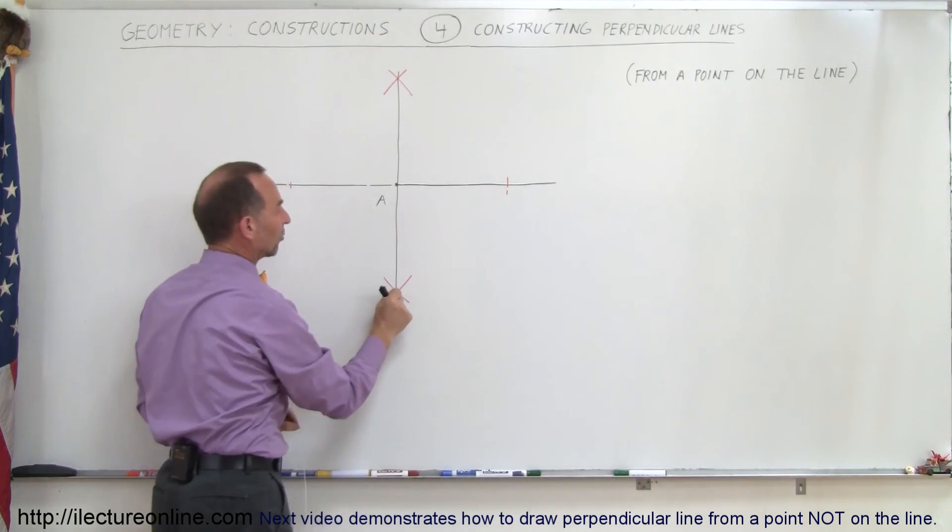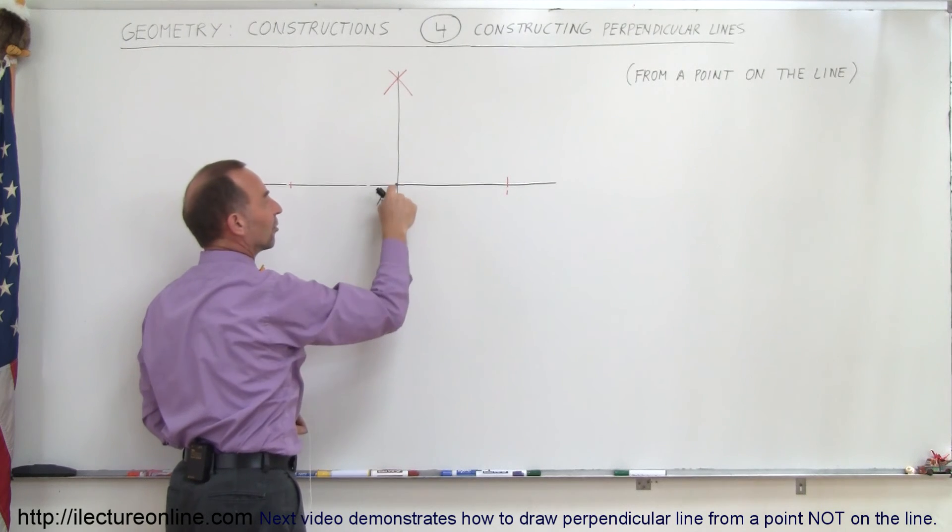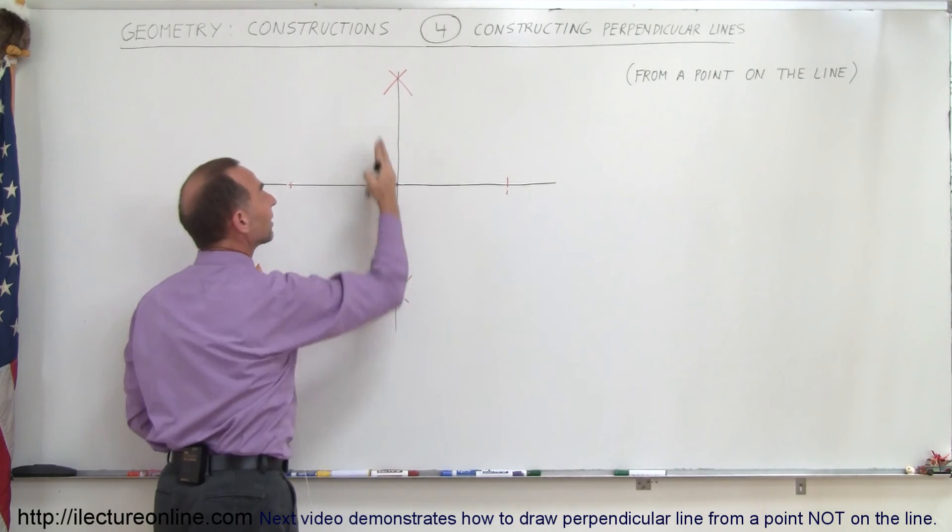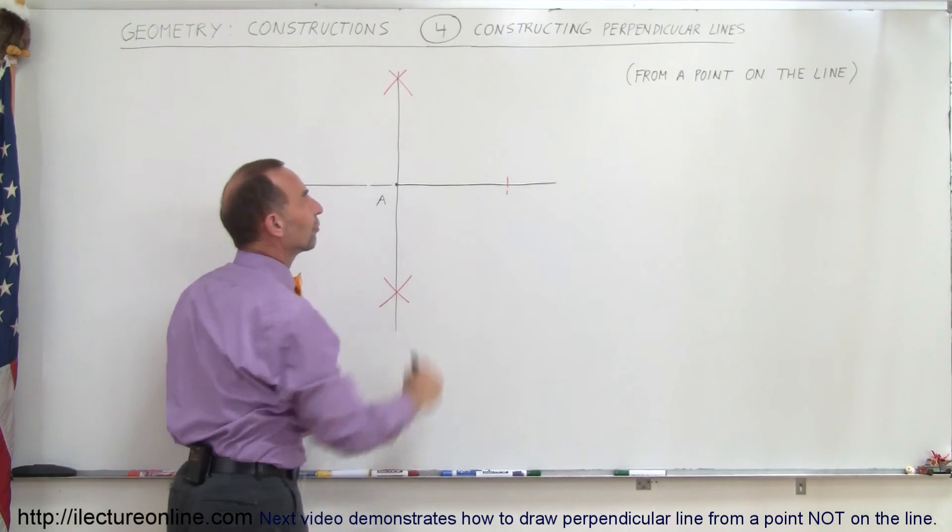Where those two little arc lines cross, you have two points right there, plus you have the point through which you want the perpendicular line to go. You then connect those three points, and you have a line that's exactly perpendicular to the first line.